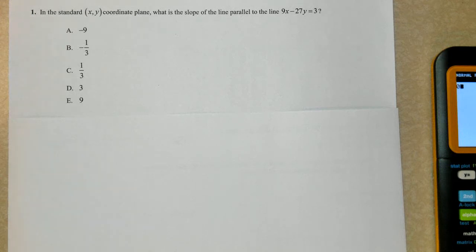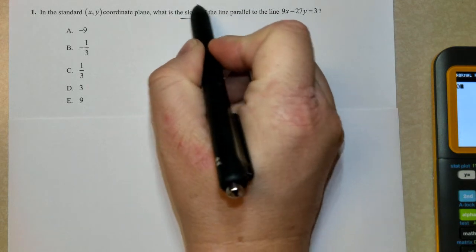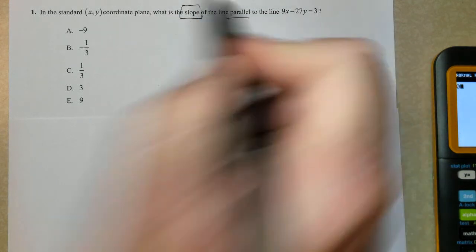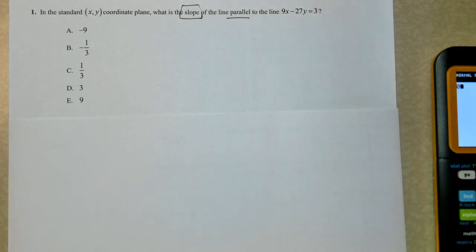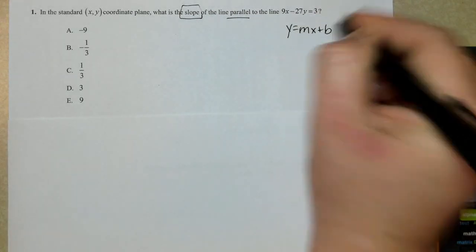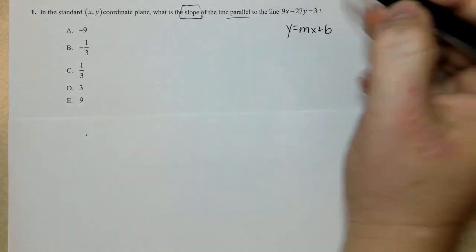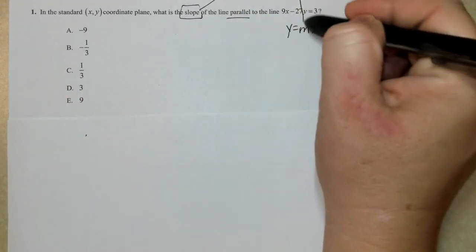In the standard coordinate plane, what is the slope of a line parallel to the given equation? So I'm going to box in the word slope and underline the word parallel. I know that I want to rewrite this in the form y equals mx plus b, but I want to achieve this answer in the least amount of time.